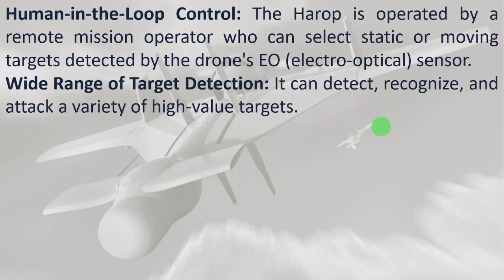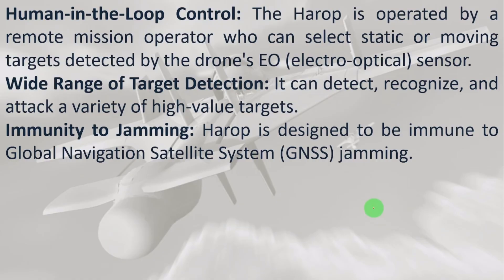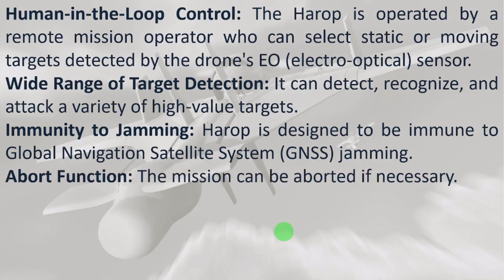Wide range of target detection: HAROP can detect, recognize, and attack a variety of high-value targets including aircraft, missiles, UAVs, and land-based targets. Immunity to jamming: HAROP is designed to be immune to Global Navigation Satellite System (GNSS) jamming. Abort function: if a mission has already started, it can be aborted if necessary and the drone returned to its original position.